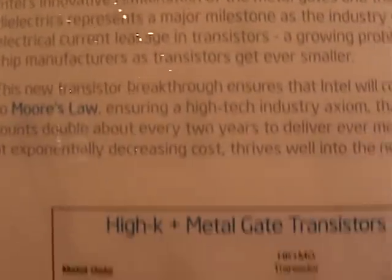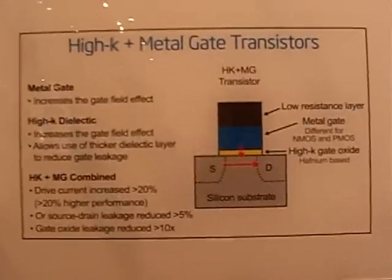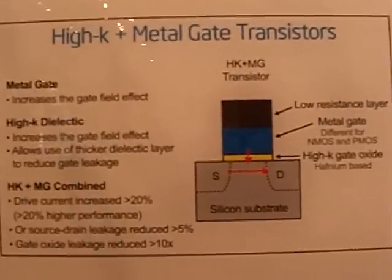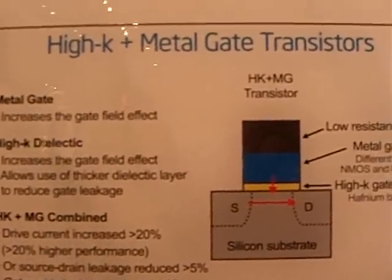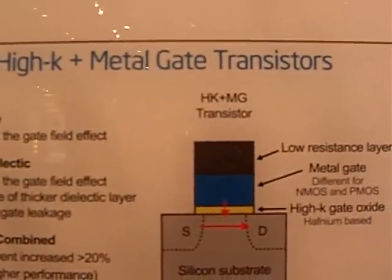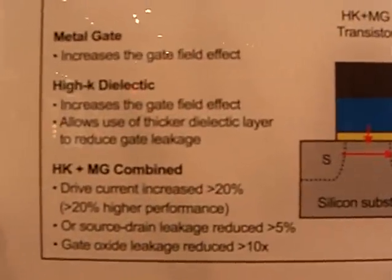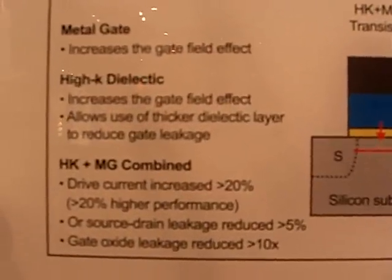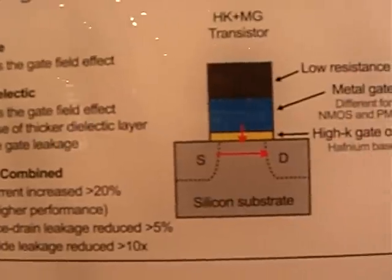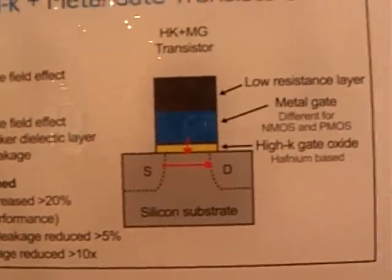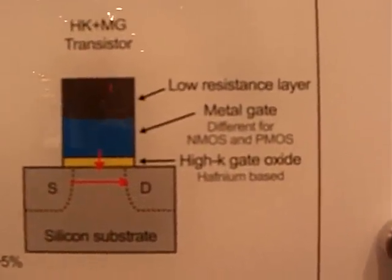And if you think about it, a yielding die in our process technology means every single transistor works. Every single one of those hundred million transistors works. And that's when we sell them. Can you believe it? Humans can actually make something where every single one of a hundred million devices works? It's remarkable.